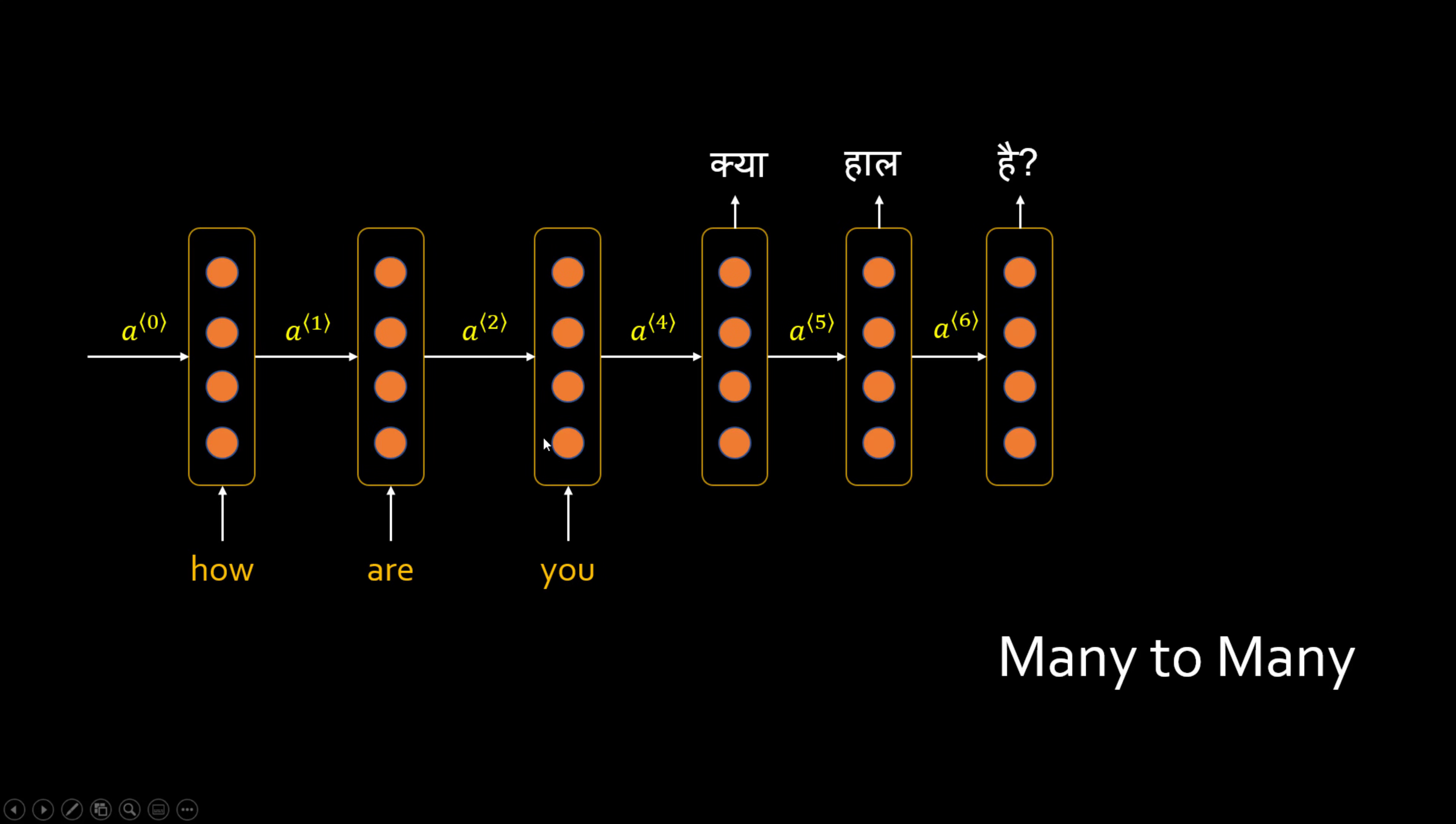So the architecture will look something like this where in your RNN hidden layers, you would input all your words initially. After you are done with your last word, then your RNN will start producing the output, and we looked into this a little bit in the last video.